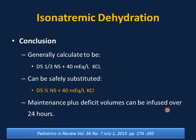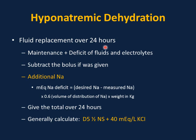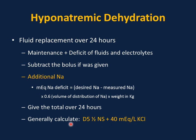For hyponatremic dehydration, fluid replacement is over 24 hours. Calculate maintenance plus deficit of fluid and electrolytes as in isonatremic dehydration, subtract any bolus given, then add the additional sodium deficit: mEq of sodium deficit = (desired sodium − measured sodium) × 0.6 × patient weight. Add all together and give over 24 hours. This generally calculates to D5 half normal saline plus 40 mEq per liter of potassium chloride.